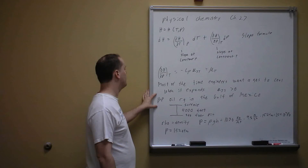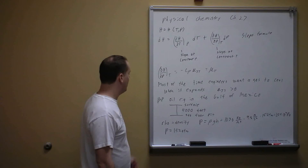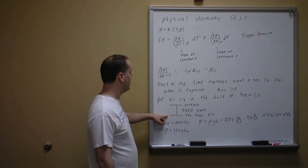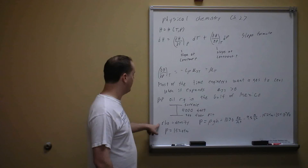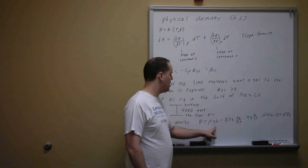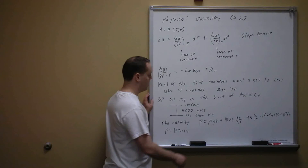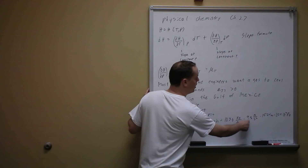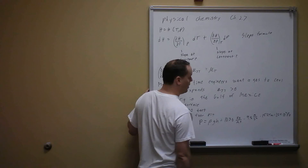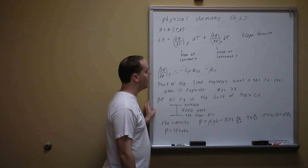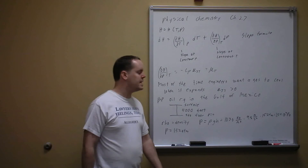Now let's apply this to the BP oil rig leak in the Gulf of Mexico. The sea floor was about 5,000 feet, or nearly one mile, down. To find the pressure there, we use P equals rho·g·h: 1,030 kg/m³ times 9.81 m/s² times 1,524 m gives 1.54 times 10 to the 7 pascals, which converts to 152 atm.